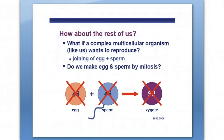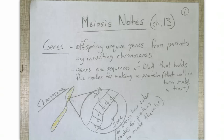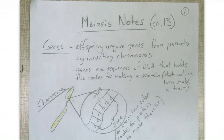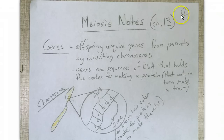We're going to go to our notes and get some information about genes as well as asexual reproduction. In front of you, you should have some blank sheets of paper. At the top of your paper, write down 'meiosis notes.' For the AP Biology class, this is Chapter 13. Make sure you list the page number in your notes so that you don't get those confused.